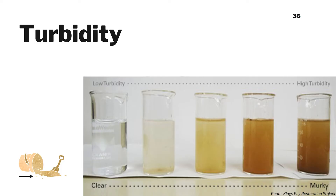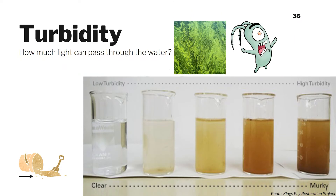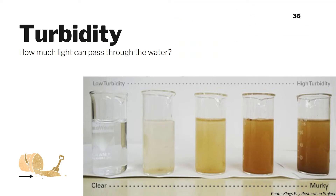Turbidity is the measure of water clarity, which is the amount of light that can pass through the water. In general, clear water is an indicator of healthy streams. Water clarity is impacted by suspended materials in the water, such as soil particles — think clay, silt, and sand — and algae, plankton, microbes, and other very small particles. Clear water has lower turbidity, and cloudy or murky water has higher turbidity.